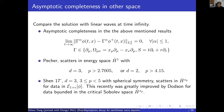Another motivation for using the critical Sobolev space is the brilliant recent result by Donninger, who proved that the equation is globally well-posed in the critical Sobolev space with spherical symmetry restricted to p between three and five. It remains open what happens for other p and whether the spherical symmetry assumption can be removed.